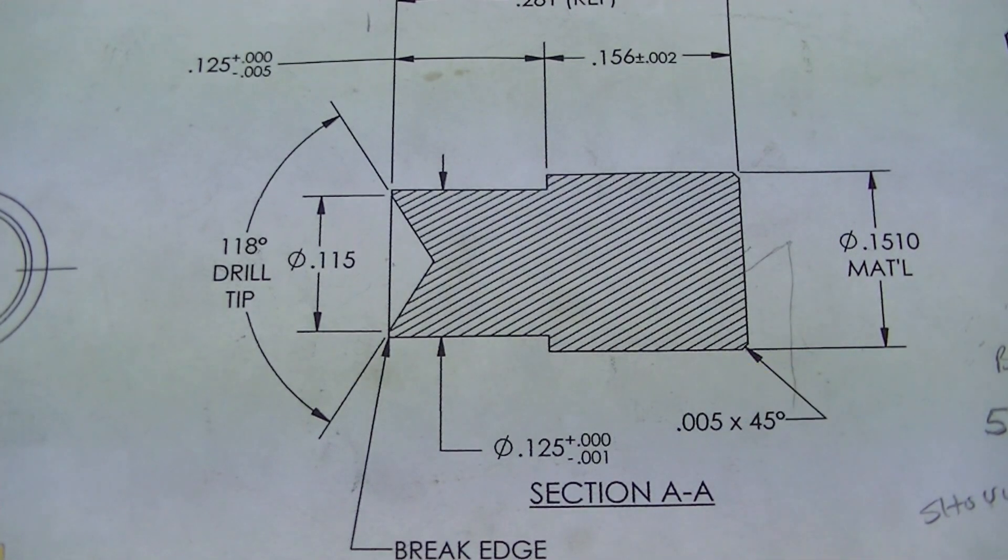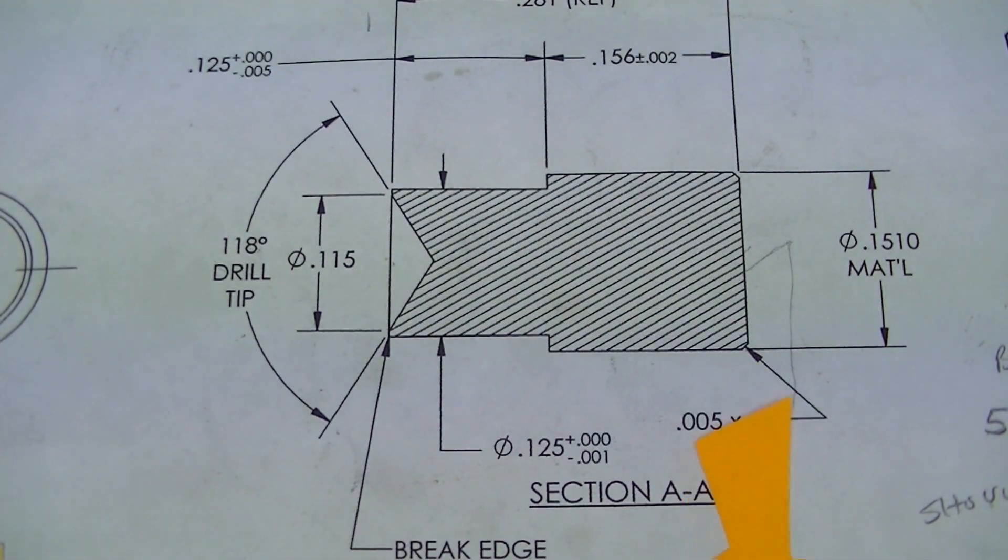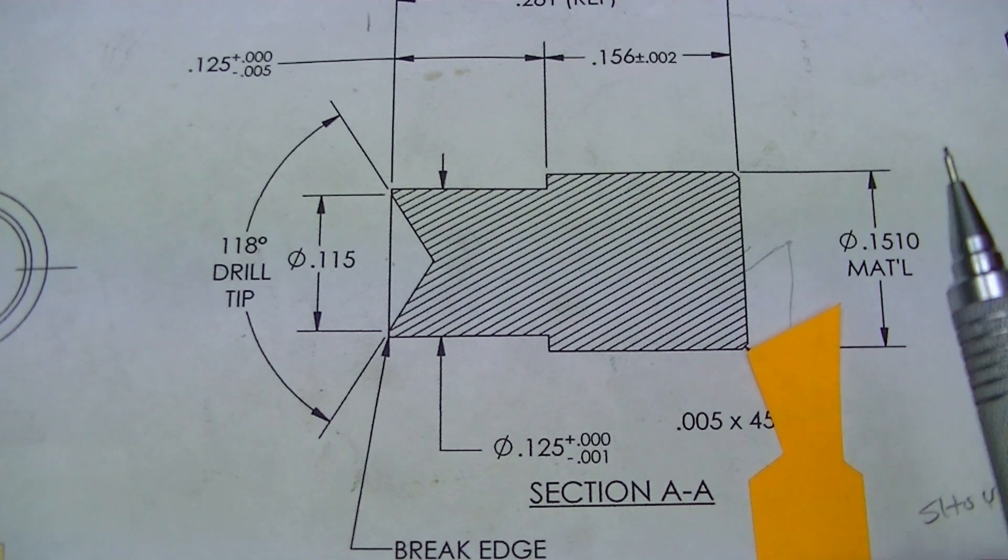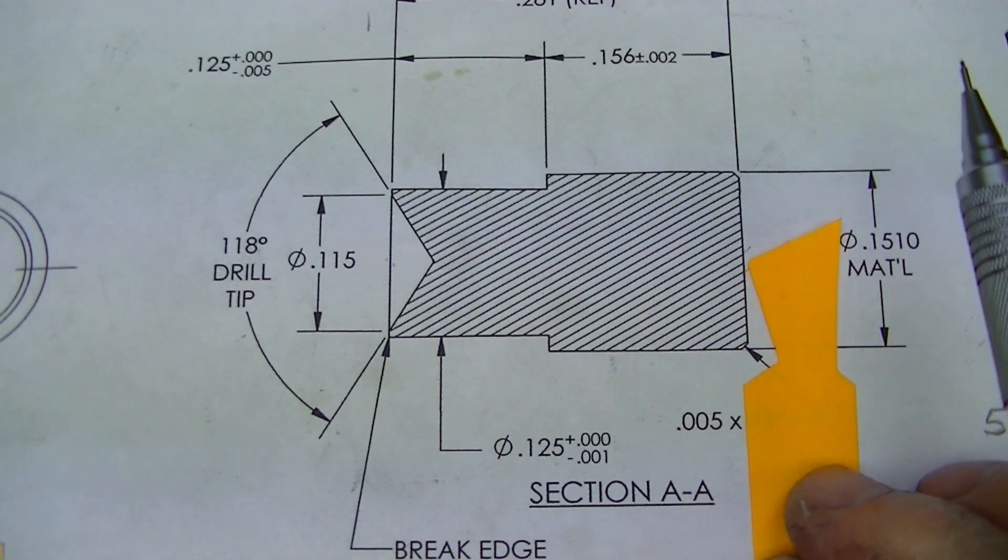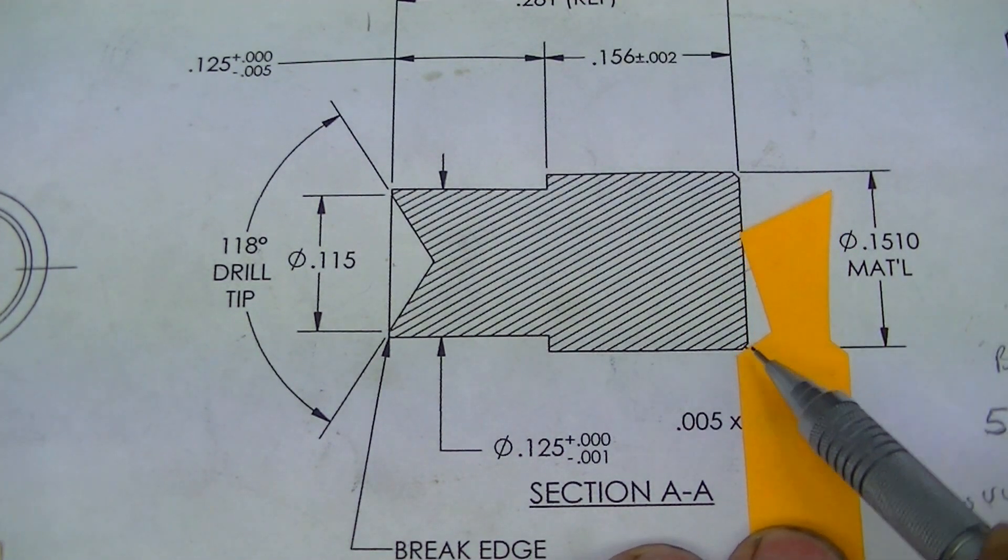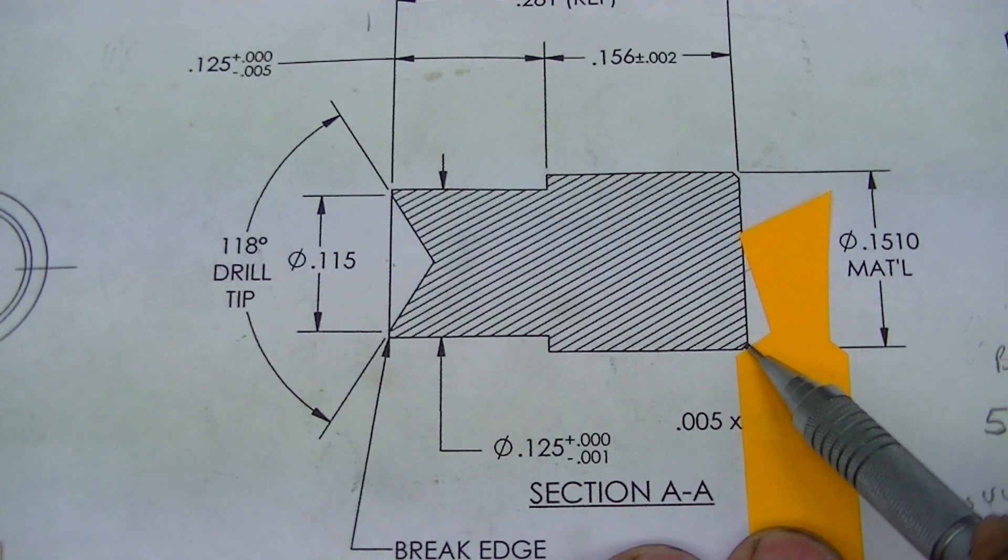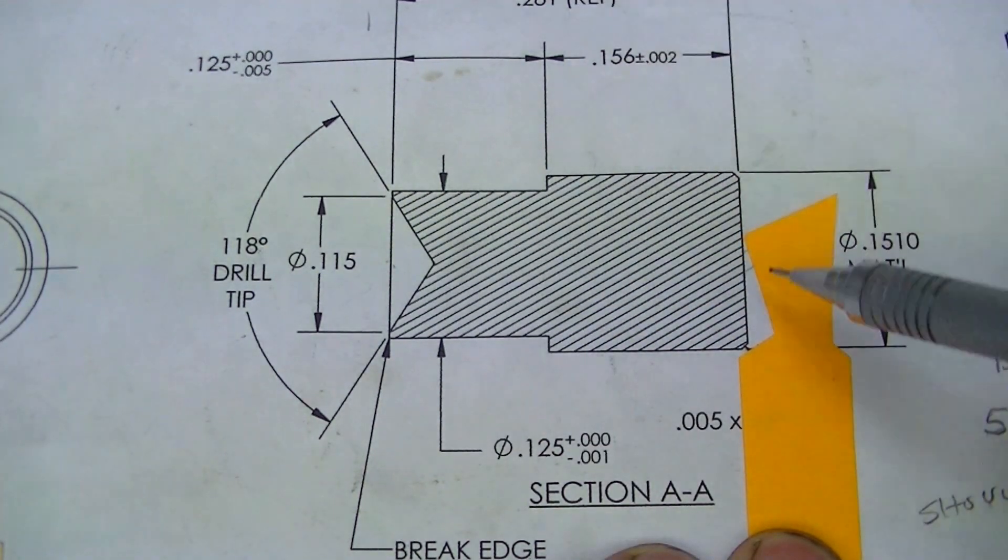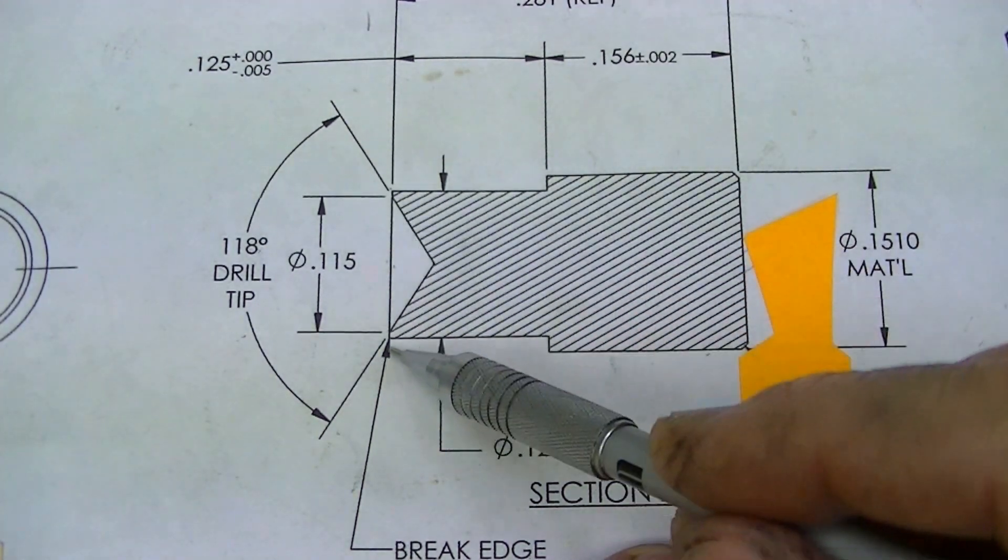The tool for that is going to look like this. We have a parting tool with a steep angle here to leave very little tip on the piece that's left. We come in, we face to length, but we continue past, and then this chamfers this corner just by controlling the X where I stop on my digital.